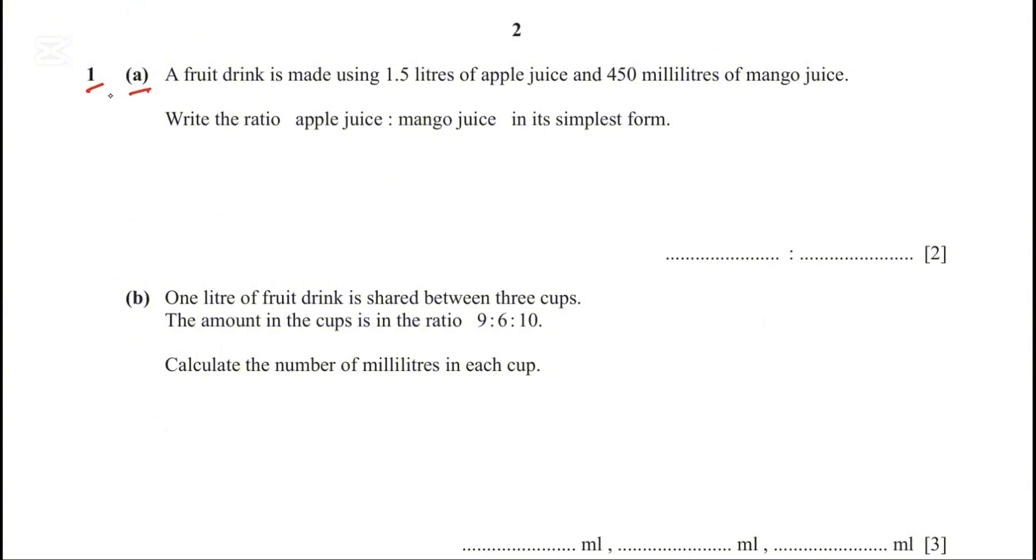Question 1A. A fruit drink is made using 1.5 liters of apple juice and 450 milliliters of mango juice. Write the ratio of apple to mango in its simplest form. First, let's convert 1.5 liters to milliliters. That's 1.5 times 1000 equals 1500 milliliters. Now let's simplify 1500 to 450. Cancel the zeros and divide by 15. 150 divided by 15 gives 10, and 45 divided by 15 gives 3. The ratio is 10 to 3.